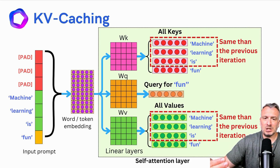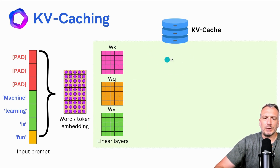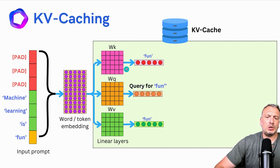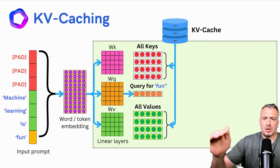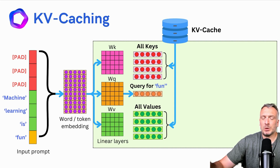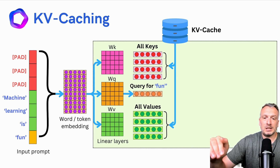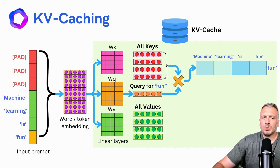In principle, because they have the same value, we could cache those instead of re-computing them. The way to do it is to introduce a cache — some kind of local database that is going to cache the value of those vectors. We need to compute the key, query, and value for the new token 'FUN,' and we're going to cache them into the KV cache. Now that they are cached, we pull from the cache the keys and values of the previous tokens. They were computed in previous iterations of the decoding process, so we don't need to compute them again. We can just pull them from the KV cache, assuming that at each iteration we cached the different keys and values. Now we can continue the computation of the hidden state like usual.